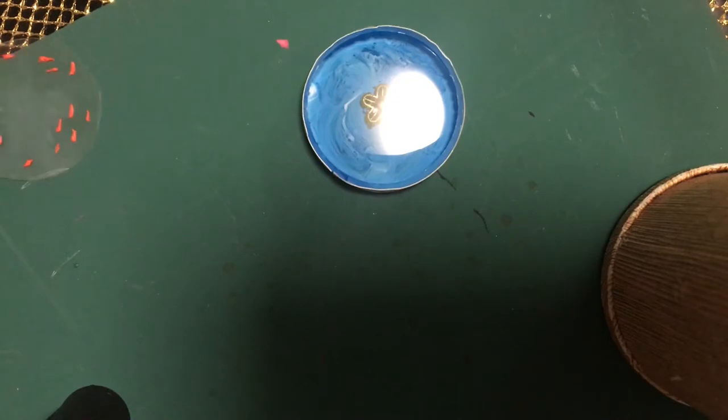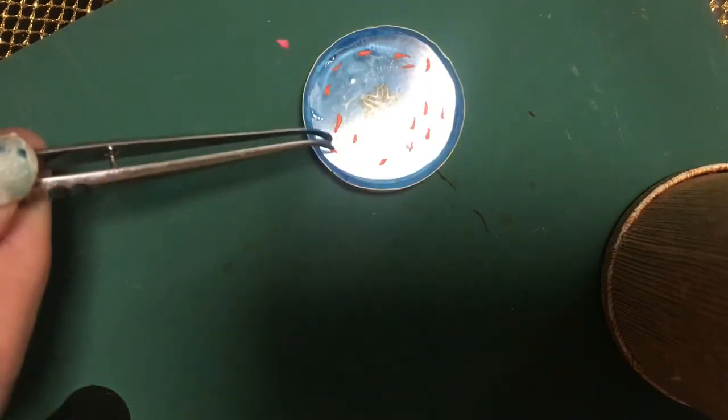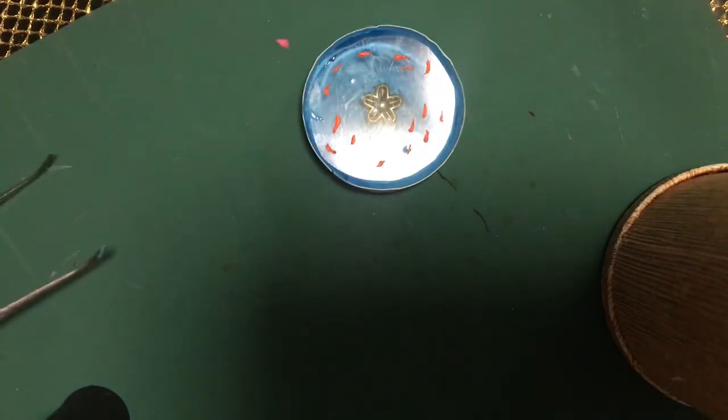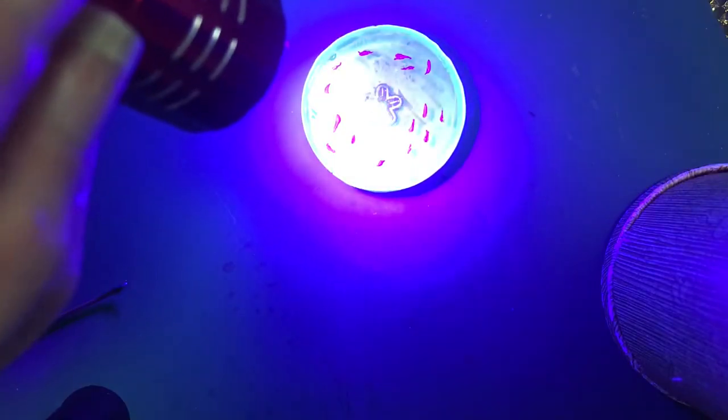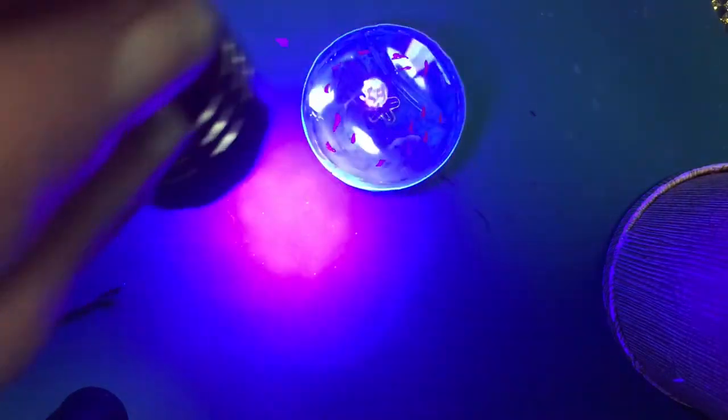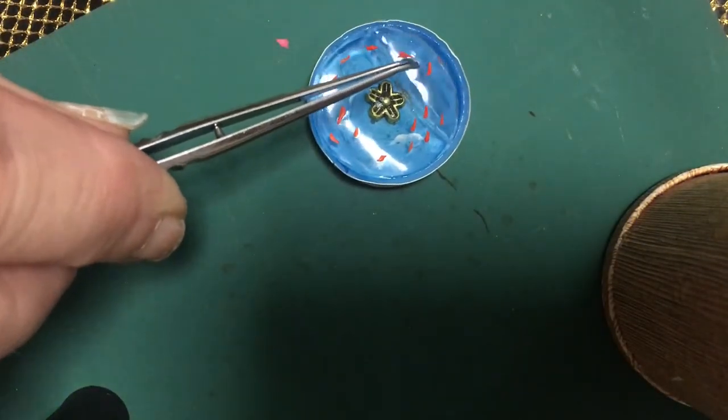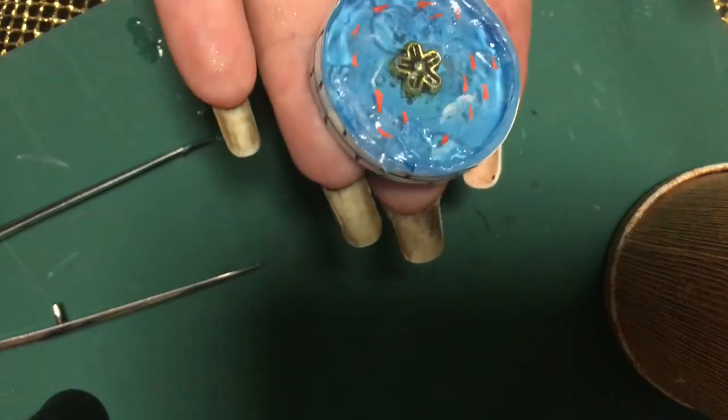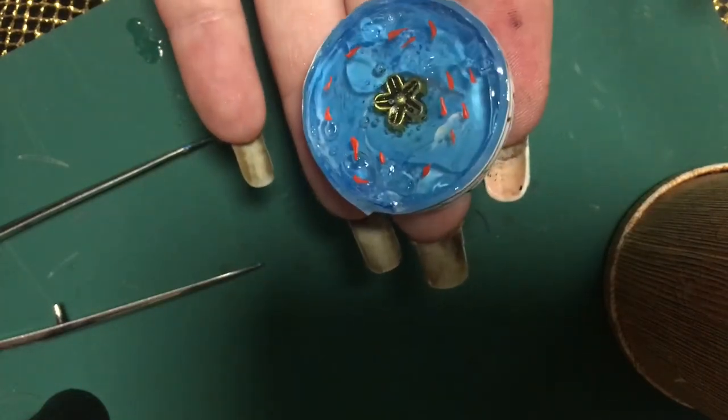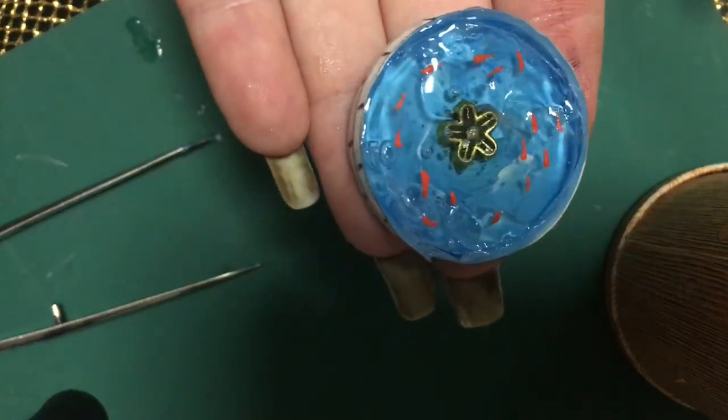And then I'm going to take the little fish on the disc that we've cut out and place them into the resin, and then put the light on. And there's our little water fish fountain with our fish.